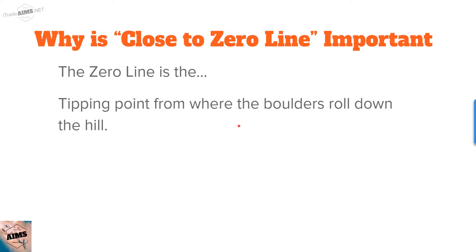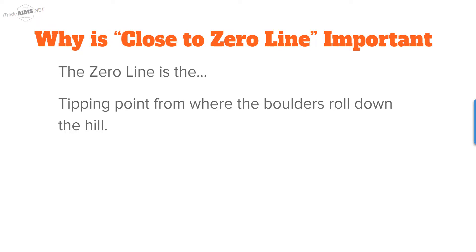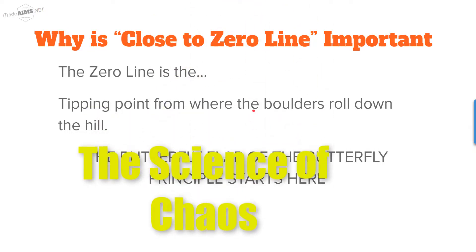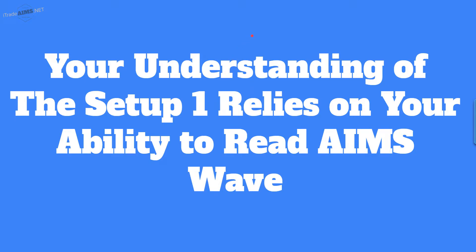The zero line is the tipping point from where the boulders roll down the hill. If you were at the peak of a mountain and rolled a boulder down either side, it will roll, build energy, and be easy to start but very difficult to stop once it has gained momentum. It is the butterfly flap of the butterfly principle — that's where it starts. You can google the butterfly principle; it's from the science of chaos.